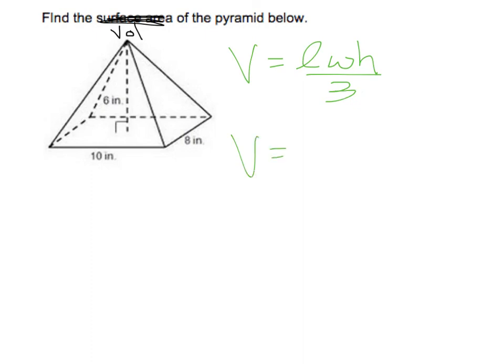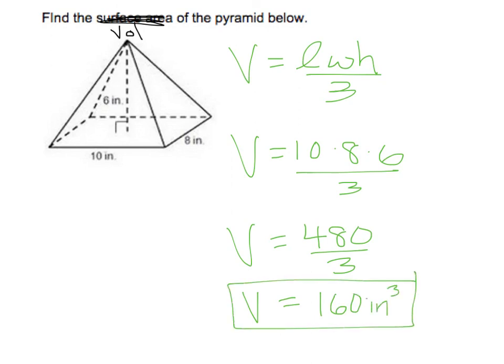So we are going to do 10 times 8 times 6, divide it all by 3. 10 times 8 times 6 is 480. Divide it by 3. Your volume is going to be 160 inches cubed. Again, it's cubed because it's volume.